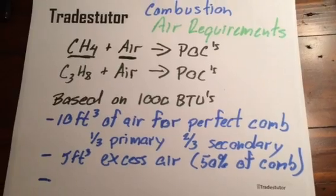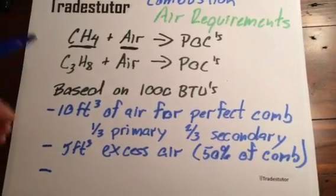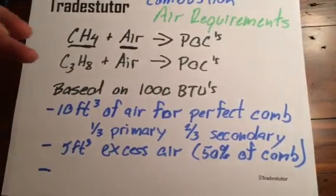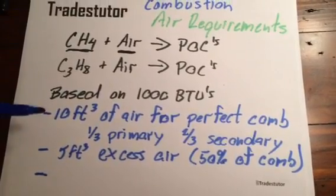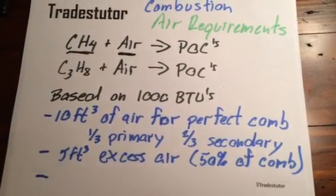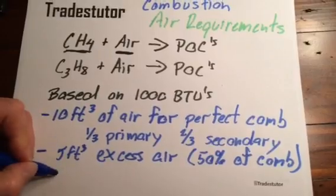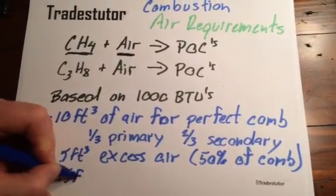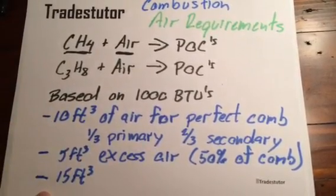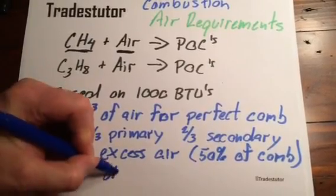we're going to add this air, dilution air, and what we add it for is to slow down the gases and to cool down the gases. 10 cubic feet plus 5 cubic feet is 15, and that's actually what we get for dilution air. 15 cubic feet of dilution air.